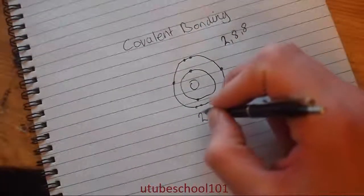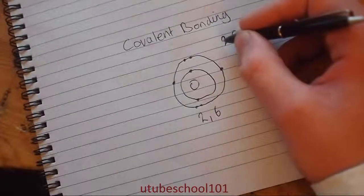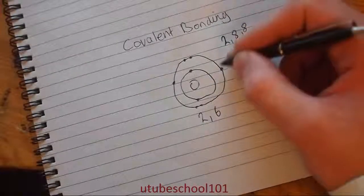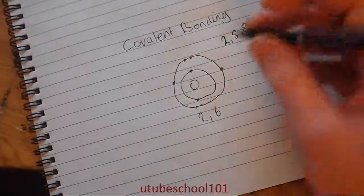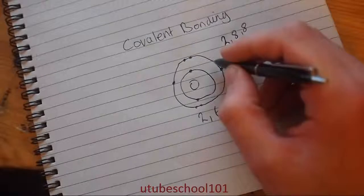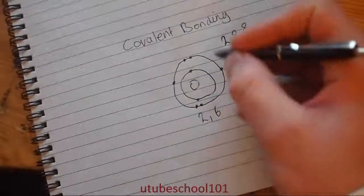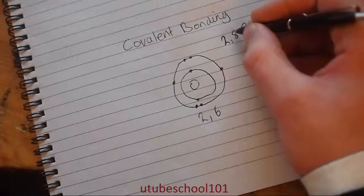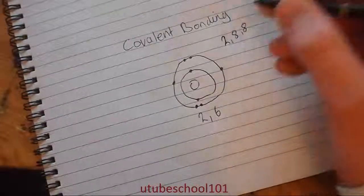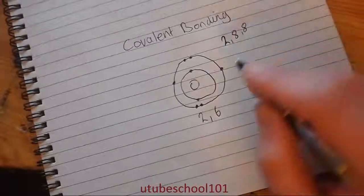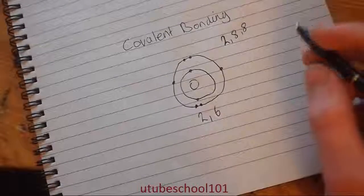But anyway, back to oxygen. On the first layer it has two electrons. And that fits. It's got a full shell. It's happy with the first shell. However, on the second shell it only has six electrons, whereas it could hold a possible eight electrons. So oxygen is a bit unhappy. It's wanting to have a full shell. So how could it gain a full shell?